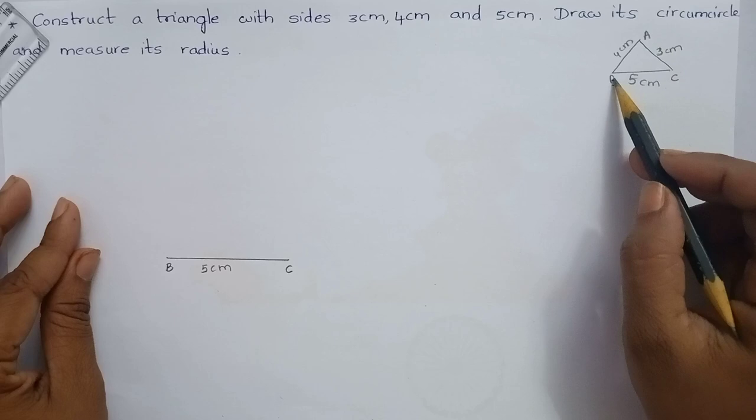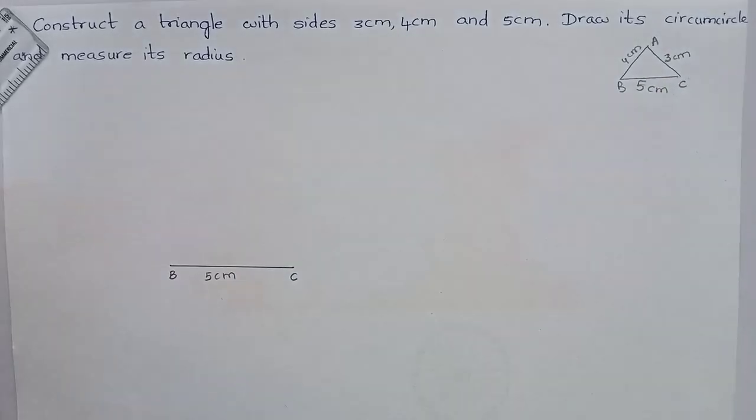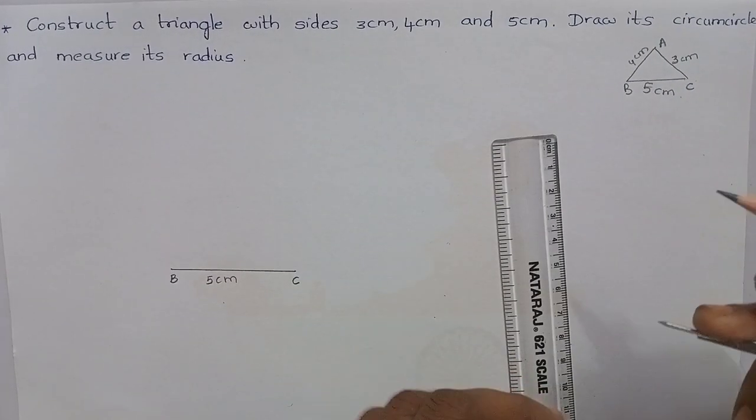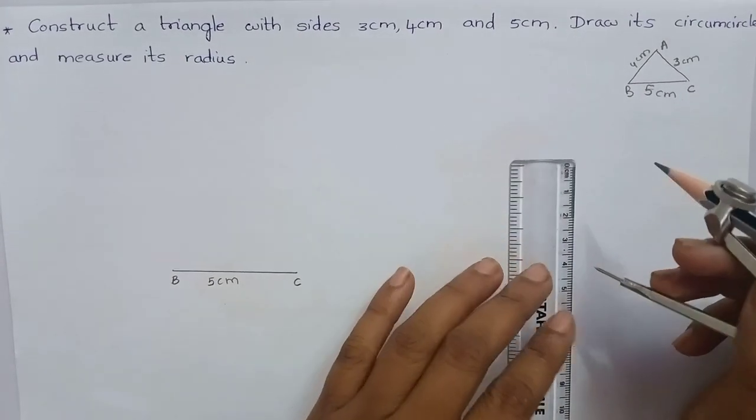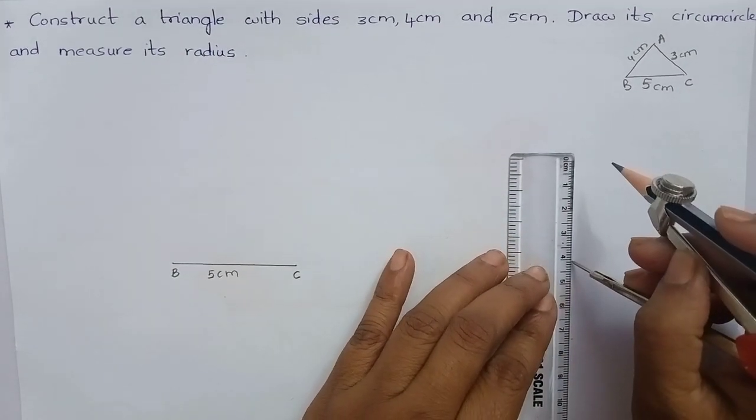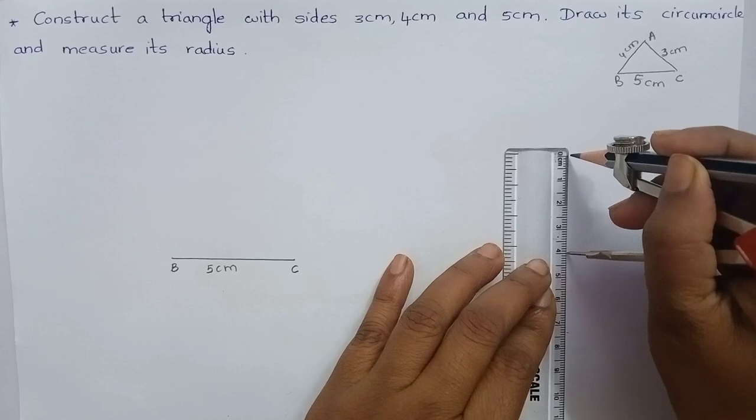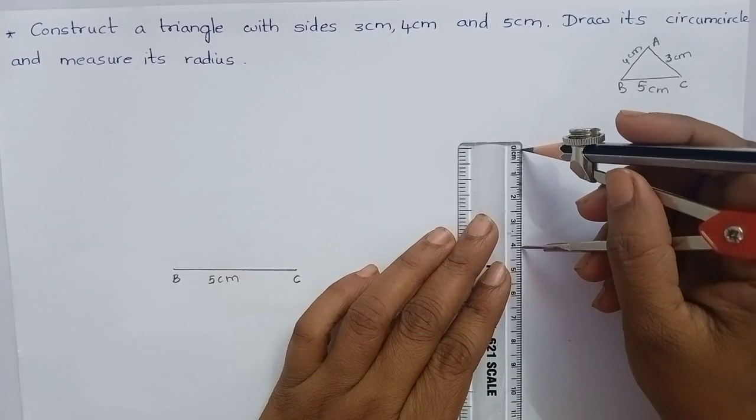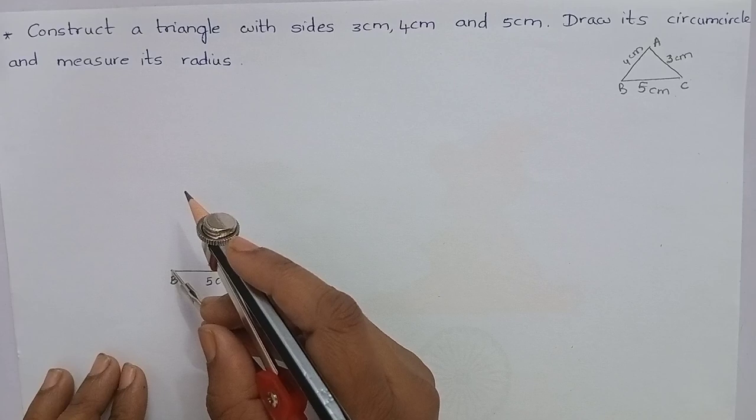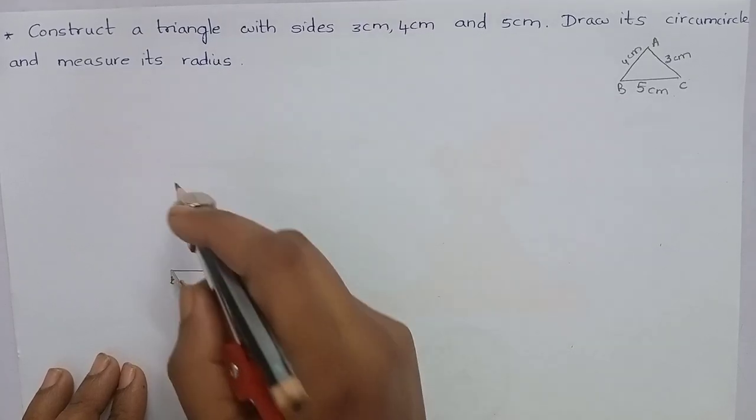BA is 4 cm. Use the compass and the ruler to mark 4 cm. You can see that it is 4 cm. Now let's mark an arc from the point B.